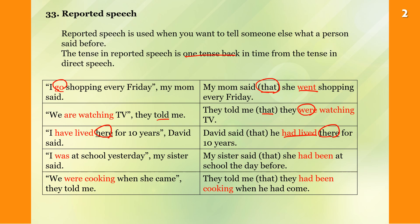'I was at school yesterday,' my sister said. My sister said that she had been at school the day before. So 'was' becomes past perfect 'had been,' and 'yesterday' becomes 'the day before.'